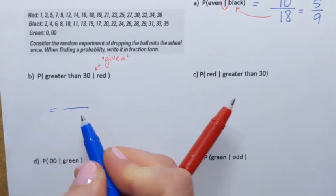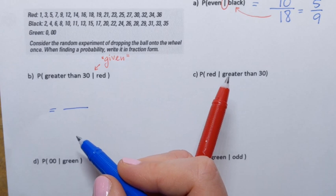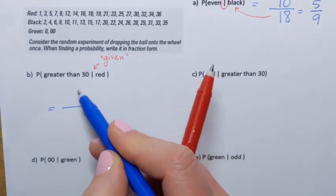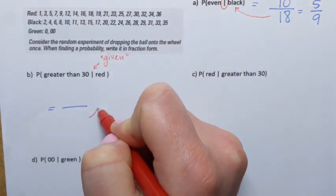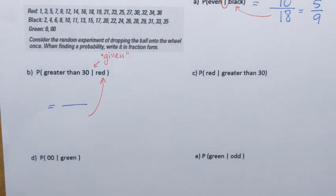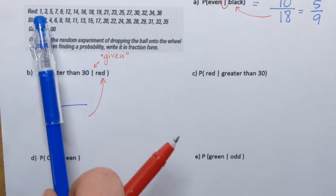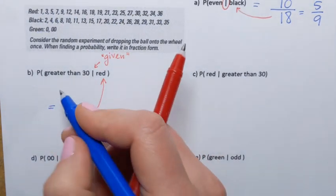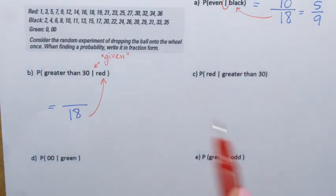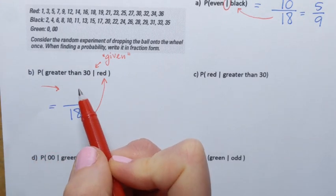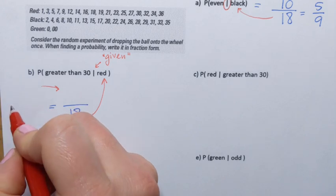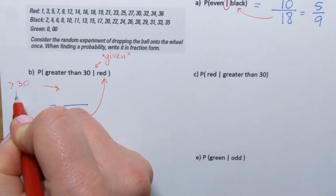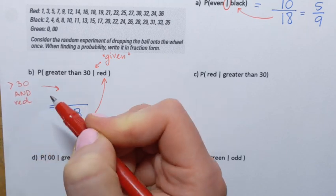The denominator corresponds to the condition, which is red. I write down how many red numbers there are on the wheel. According to the chart, there are 18 red numbers, so the denominator is 18. The numerator should be the number of slots that are both greater than 30 and red at the same time.